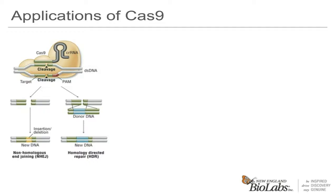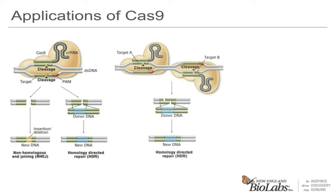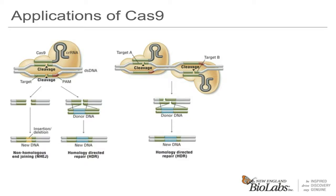The Cas9 nickase has been engineered by a point mutation in the RuvC seed domain, which enables it to cut only one strand of a double-stranded target. Nicking occurs opposite the target sequence. By using two different guide RNAs in combination, staggered DNA breaks can be generated with reduced off-target cleavage by targeting two sites in close proximity.